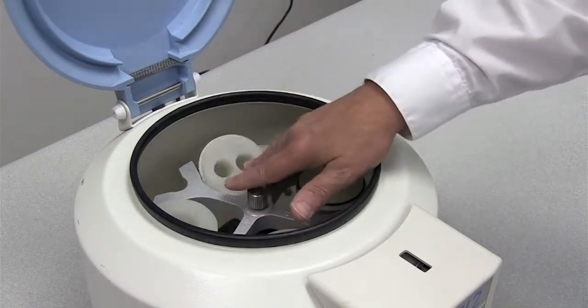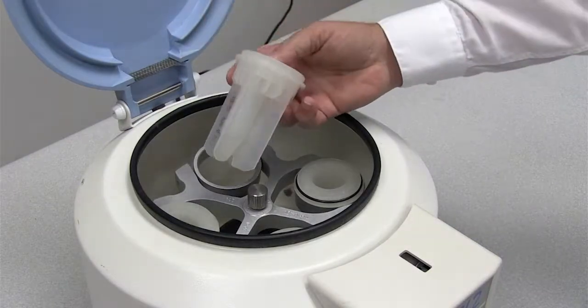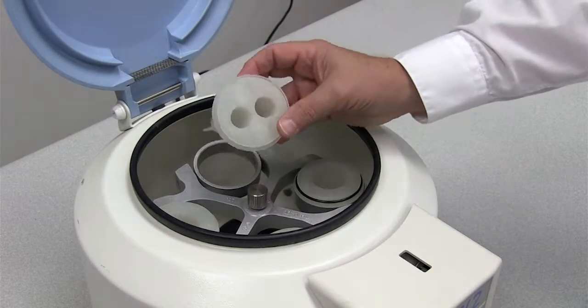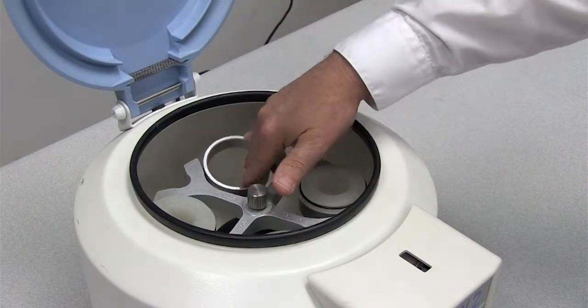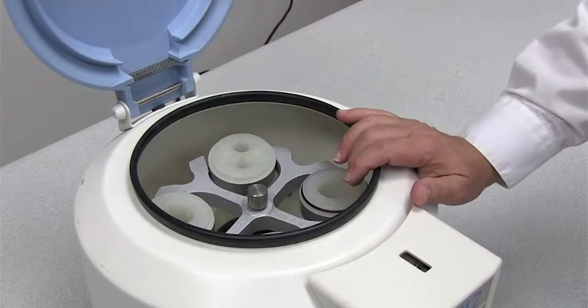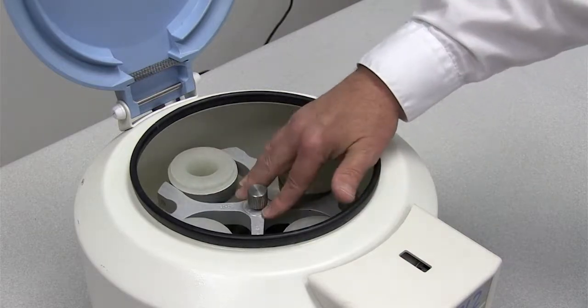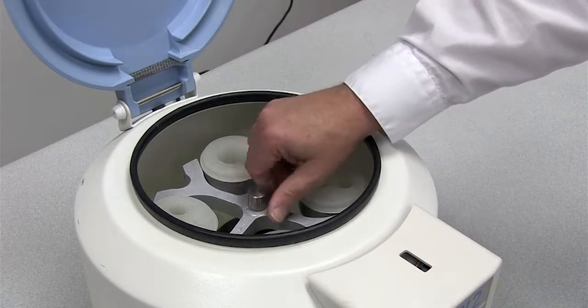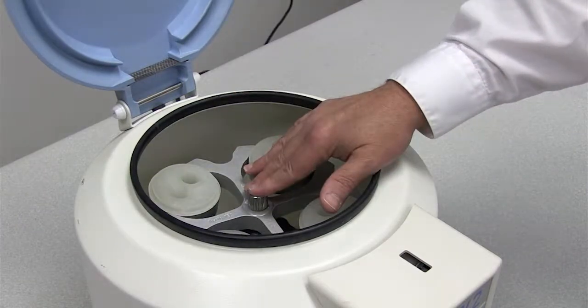Also, this, as you can see, is a swinging bucket rotor, so that these swing. They have the removable buckets or tube carriers that fit into these rings. We call these rings trunnion rings. And so this is a typical centrifuge for handling cells.